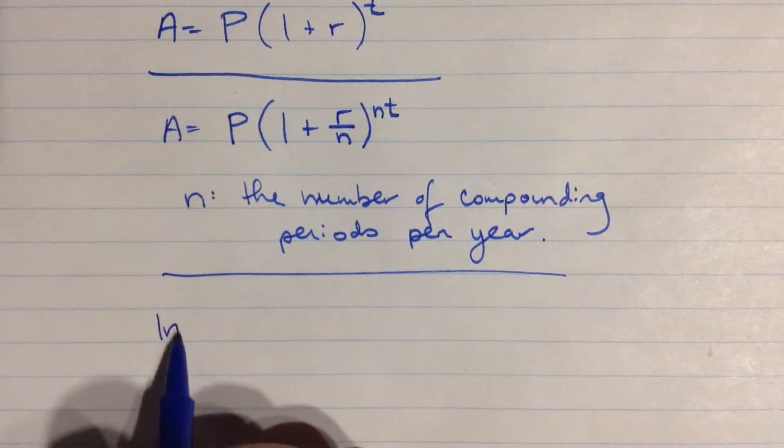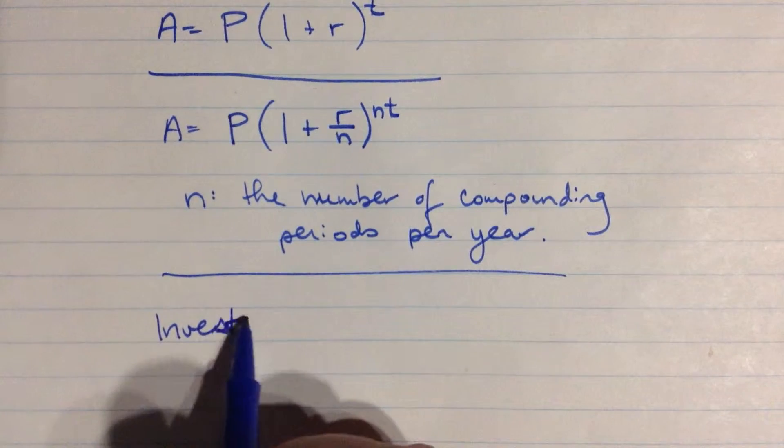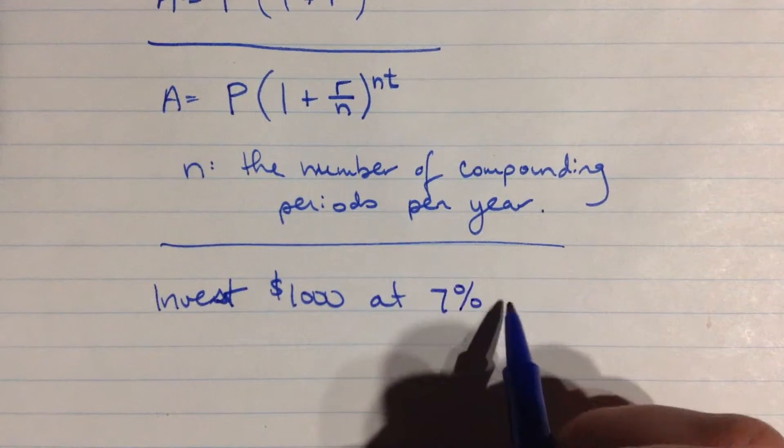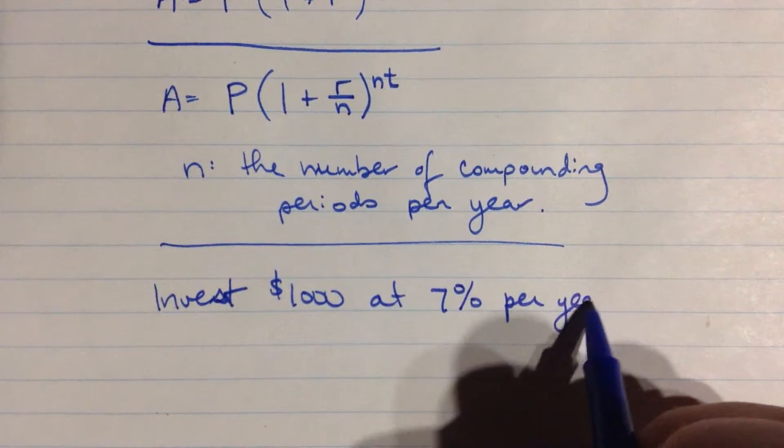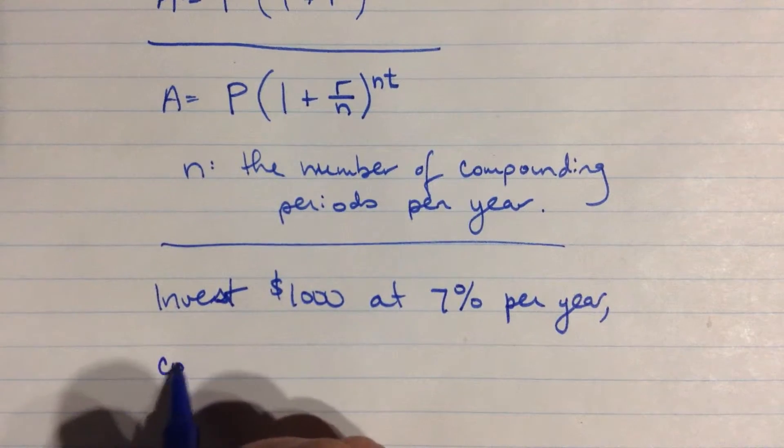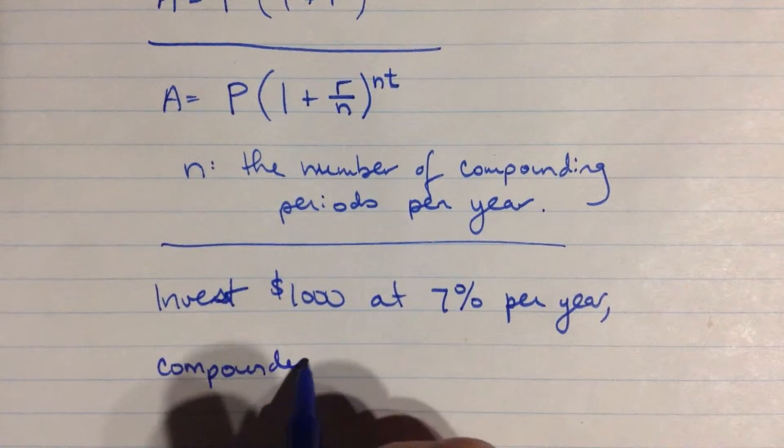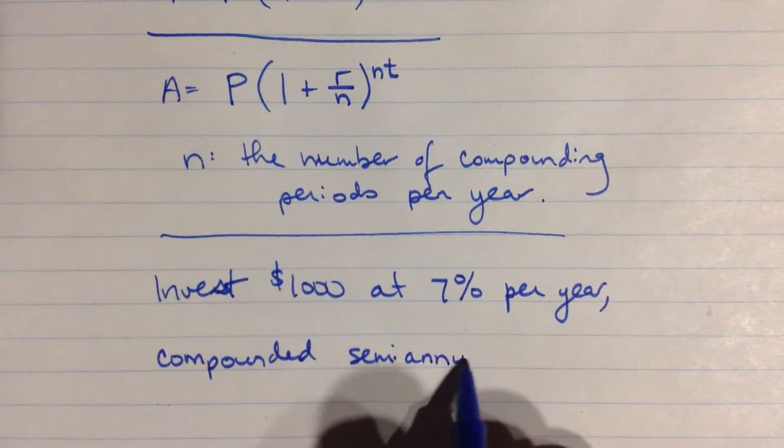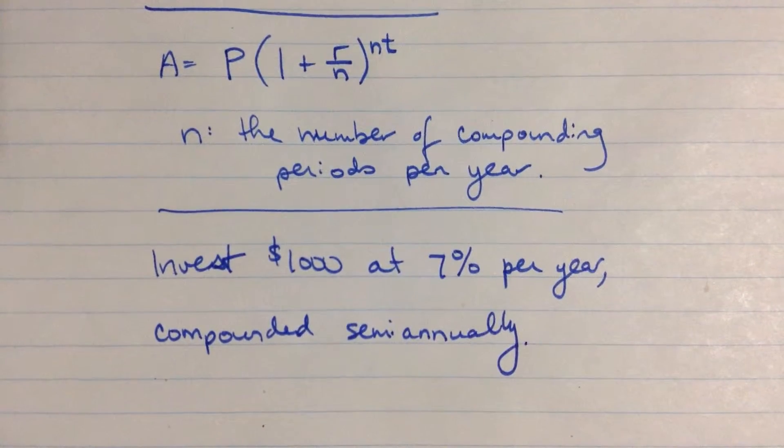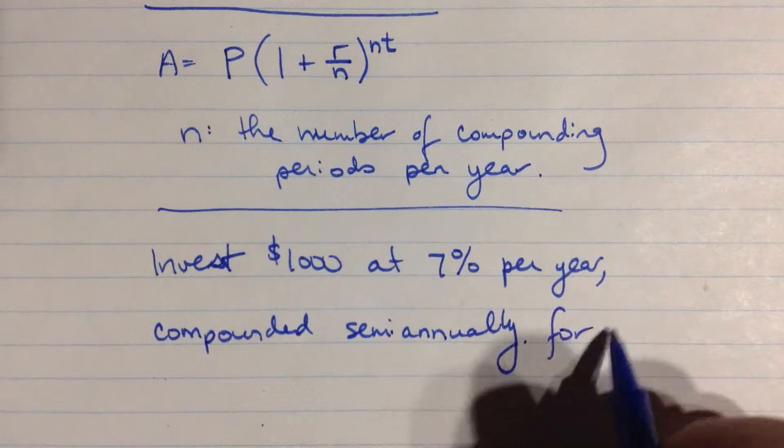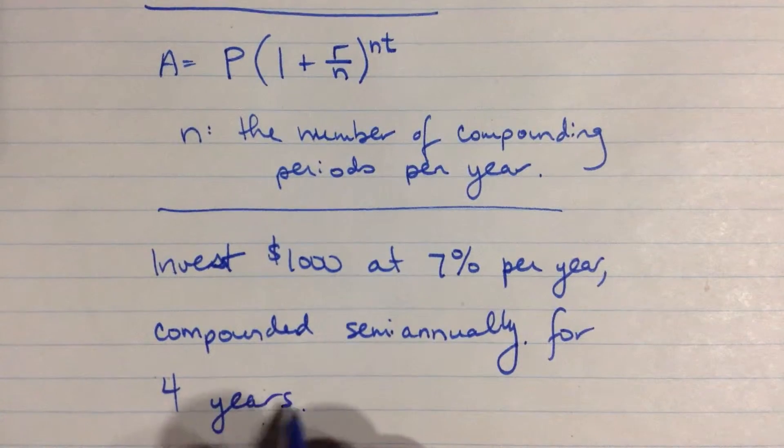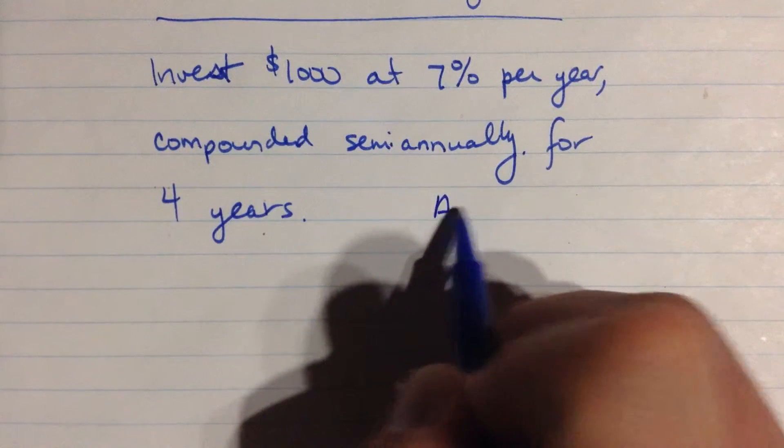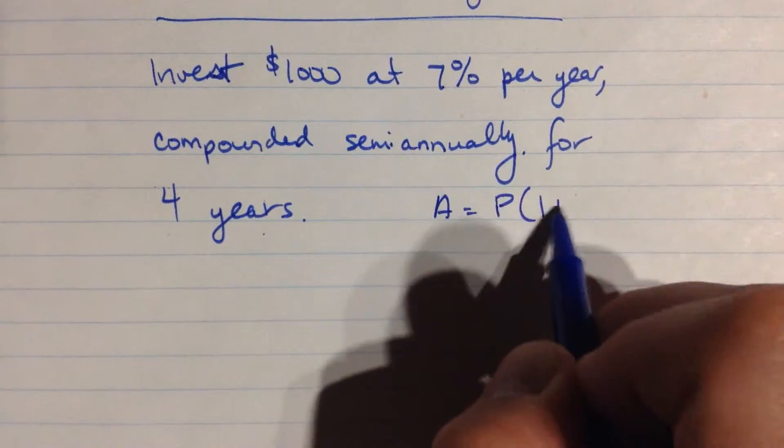Suppose that you invest $1,000 at a rate of 7% per year, compounded semi-annually for four years. So I'm going to just write our little formula off to the side here again so I still have it on the screen for you.